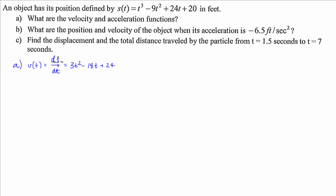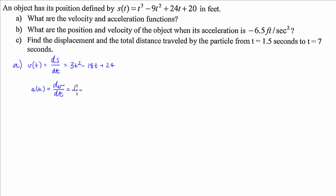For acceleration, acceleration is a lot like velocity. We have acceleration in terms of time. Like velocity is the change in displacement over change in time, acceleration is the change in velocity over the change in time. So this is going to be dv over dt. If we differentiate the velocity equation we've just worked out, we get 6t minus 18. So those are our velocity and acceleration functions — that's part A done.